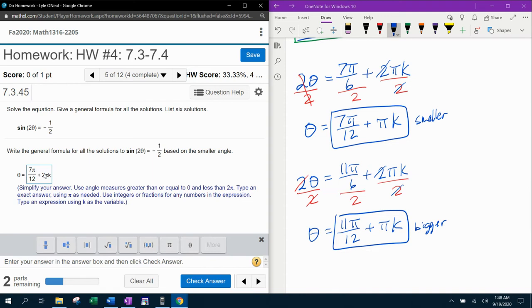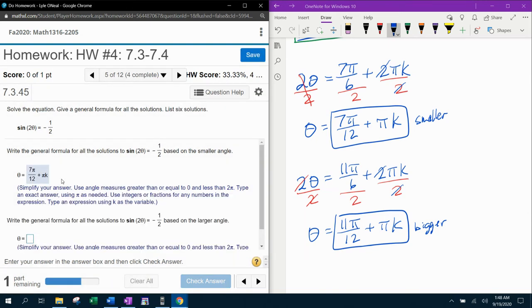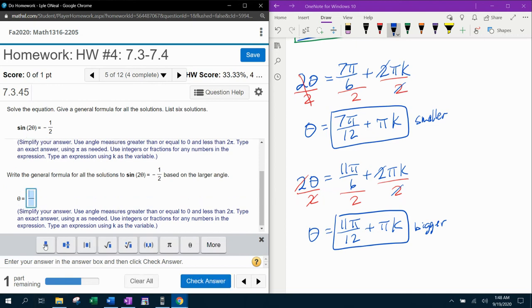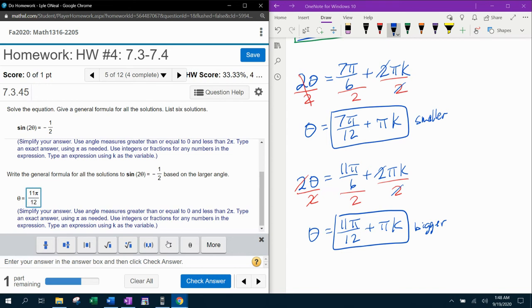Plus pi k. I'm showing you what happens if you get in a hurry, my peeps. I put a 2 that shouldn't have been there. There was not a 2 there. So 7 pi over 12 plus pi k. And then the other theta for the larger angle is going to be 11 pi over 12 plus, this time just pi k.